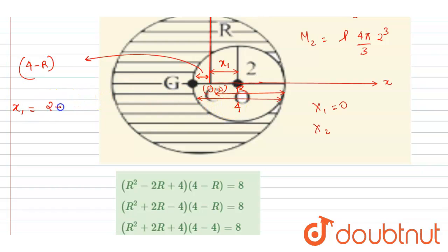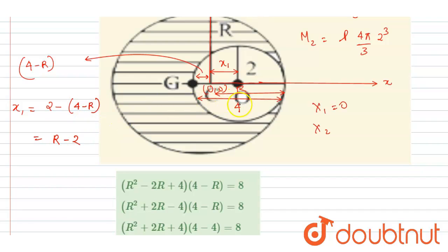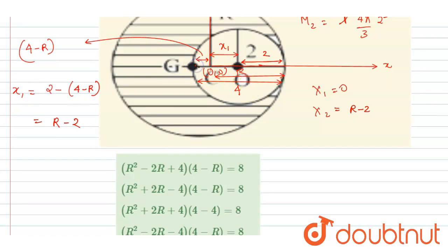So x2 equals 2 minus (4 minus r), which gives x2 equals r minus 2. You can also see it directly: this is 2 and this is r, so x2 is r minus 2. The center of mass of the system is at a position of 4 minus r from the origin.